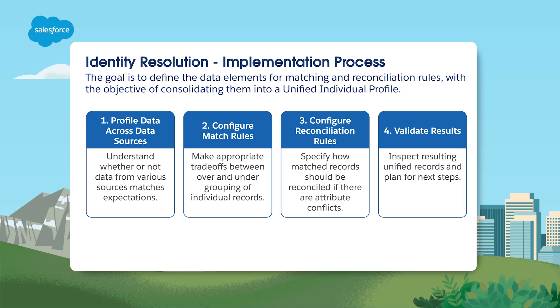Lastly, you need to validate your results. You work through your resolution summary results and check that records have been correctly assigned to the correct unified profile. It's very important to understand that identity resolution is an iterative process. It may take a few tries, maybe many tries, to get your matching and reconciliation rules working the way that you want.